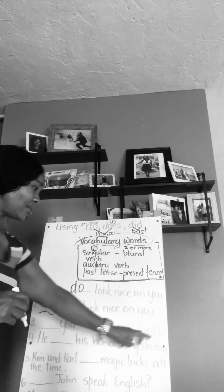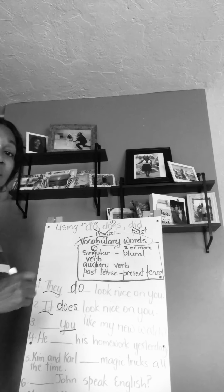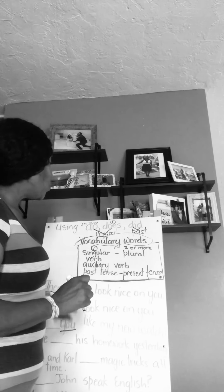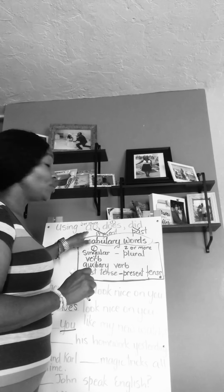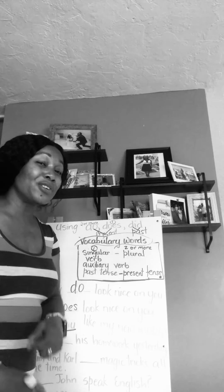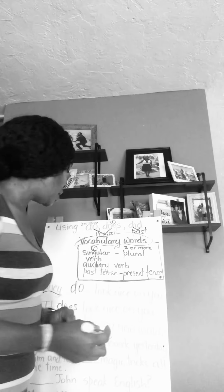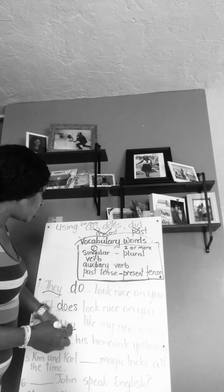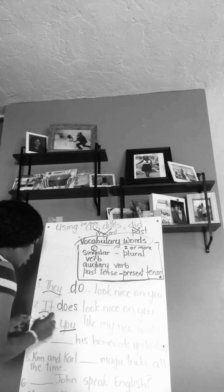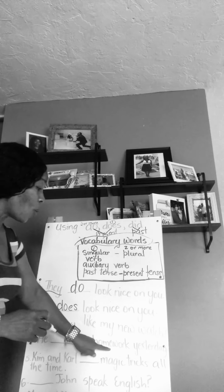Number three: 'blank you like my new watch?' When we're using 'you' we have to use plural — even though 'you' sometimes refers to one person and other times to more than one, we always use it with the plural form. This sentence is also in the present, so it cannot be 'did.' The answer is: do you like my new watch?